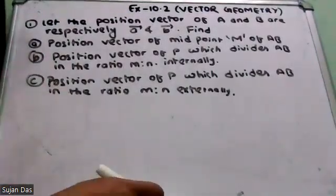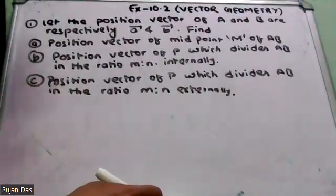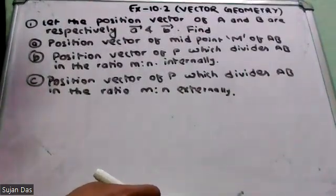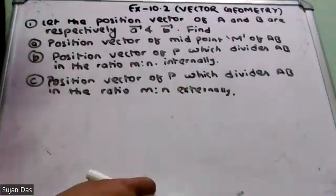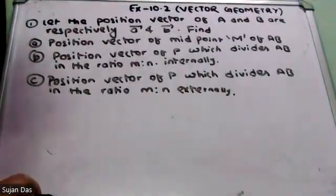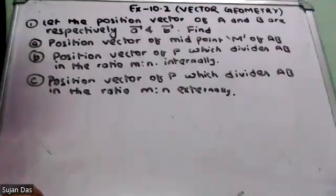So, from today we are starting x plus 10.2 of vectors. Let's solve the problem. Let the position vectors of A and B be vector A and vector B respectively.